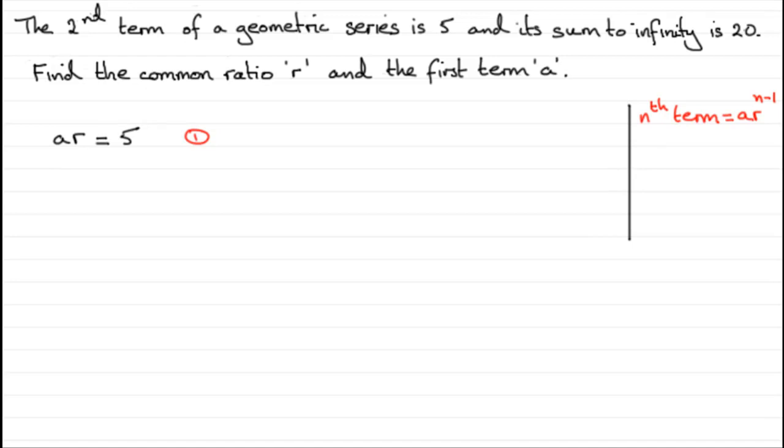So where do I get this next equation? Well we've got another fact here that the sum to infinity is 20. And you should know that the sum to infinity given by s with a subscript infinity is given by the formula a all divided by 1 minus r. So that means that I can now say that that sum to infinity a over 1 minus r is equal to 20.